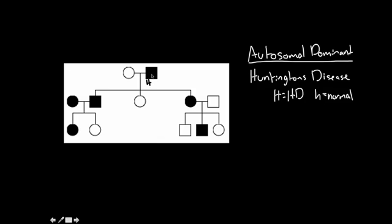For each shaded person I'm putting a big H. That's the only way they can have Huntington's disease — if they have one dominant allele. Everybody not shaded in does not have Huntington's, so they get little h, little h. Now, when you give everybody shaded in the dominant allele, you only give them one. You never give anybody two dominant alleles — ever — whether you're doing autosomal dominant or autosomal recessive. Give them one dominant allele and then figure out the rest based on the rest of the people in the chart.